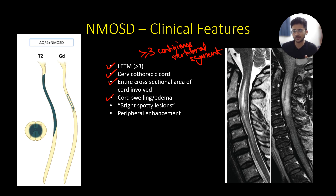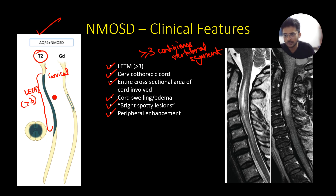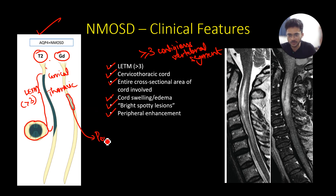Sometimes it can be confusing to differentiate NMOSD transverse myelitis from an intraaxial spinal cord neoplasm. A classical sign is the bright spotty lesions, and there is a peripheral pattern of enhancement on contrast imaging. On T2 sagittal images you see longitudinally extensive transverse myelitis predominantly involving the cervical and upper thoracic cord, with the majority of the cross-sectional area involved. On gadolinium images there is a fine peripheral enhancement.